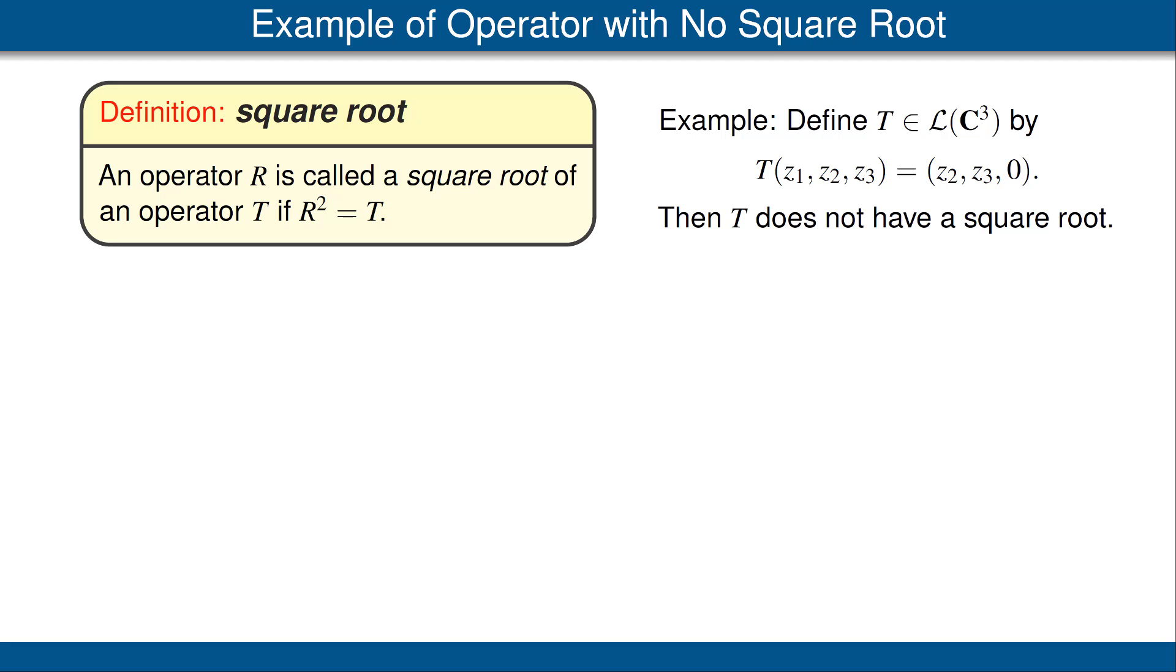Here's an example. If we define T to be the operator on C³ shown here, then T does not have a square root.